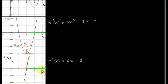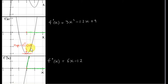For values of x greater than 2, f double prime of x will be positive. That means if we take any value of x greater than 2 and look at the slope of this graph, that slope will be positive. For example, if we take x equals 2 and a half and get the slope of the tangent to this graph, we will get a positive result.